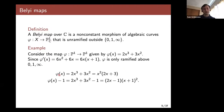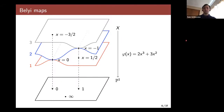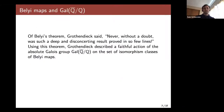Looking at how phi factors: it has a square factor, meaning one of the points above 0 has ramification index 2. The factorization of phi minus 1 also has a quadratic factor, meaning there's a point of ramification index 2 over 1. Since phi is a polynomial, it's totally ramified above infinity. Here's a picture of this map: we have three sheets of the cover, two of them come together above 0, two come together above 1, and all three sheets would come together above infinity.